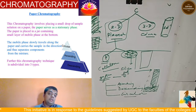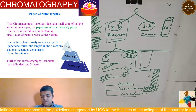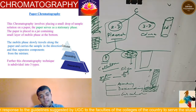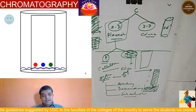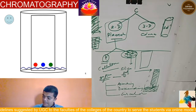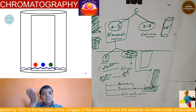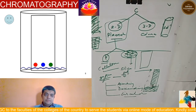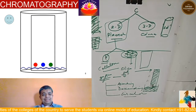The mobile phase slowly travels along the paper and carries the sample in that direction, thus separating the components from the mixture. The components are finally dragged and separated. As shown in the picture, there are three drops as the sample at the bottom. As the mobile phase moves up with a wavy line, each sample starts traveling and they get separated at different points.